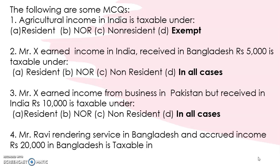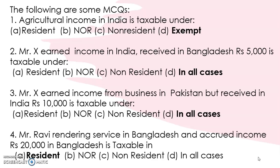Fourth question: Mr. Ravi rendering service in Bangladesh, accrued income Rs. 20,000 in Bangladesh — is taxable under which case? Options: resident, not ordinary, non-resident, all cases. Here the service is given in Bangladesh, so income earned is outside India, and accrued income in Bangladesh means income received is also outside India. When both earning and receiving happen outside India, you tax it only for the first case — ordinarily resident.